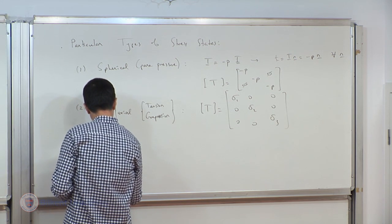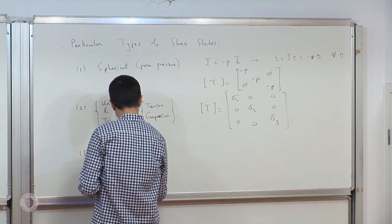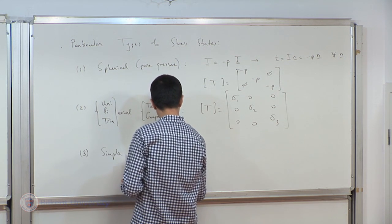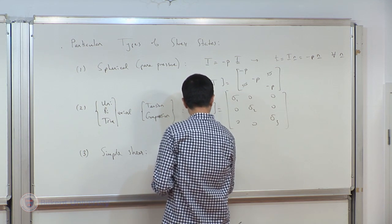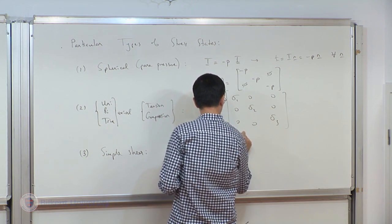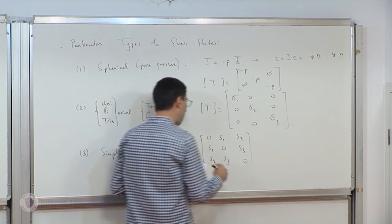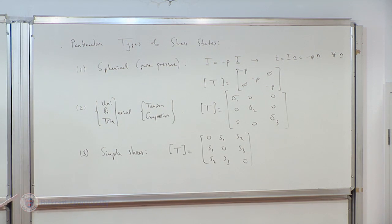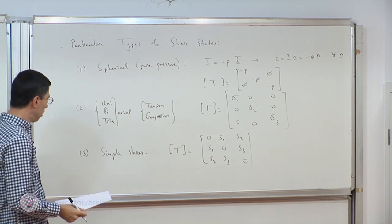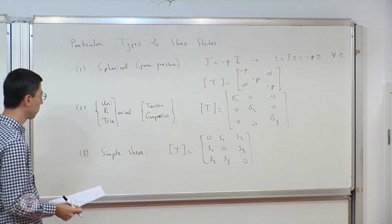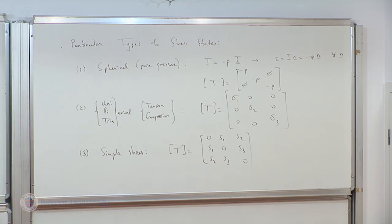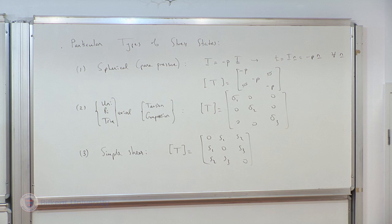A third state is simple shear, where all diagonal components are zero but off-diagonal (shear) components are nonzero — either some or all of them. This concludes a brief summary and extra information on the stress, and now we transition to the main topic: expressing the balance laws in referential form.